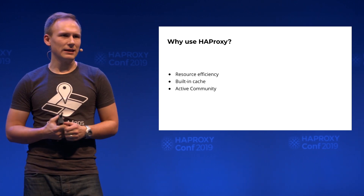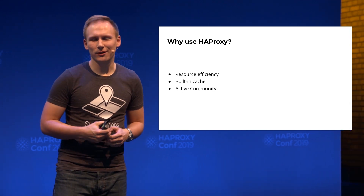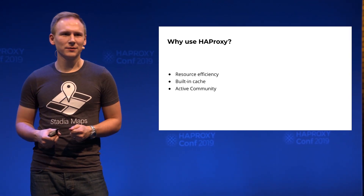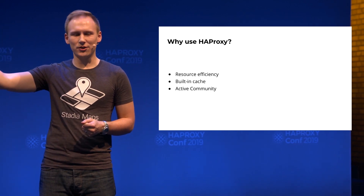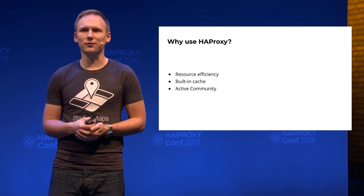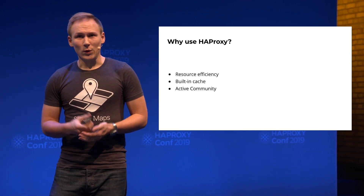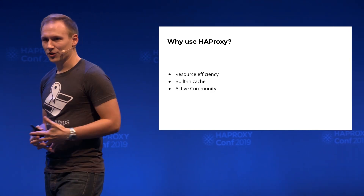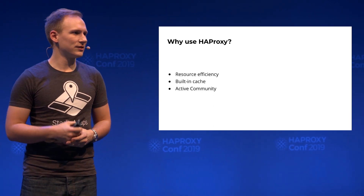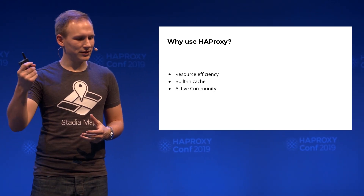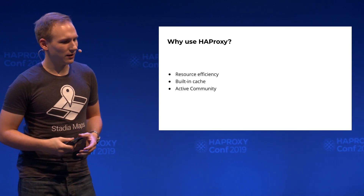Resource efficiency is key for us — we operate on a very small budget and are bootstrapped. The fact that we can put HAProxy on the edge with one core and a few gigabytes of RAM and handle all of our traffic makes a big difference. We can also use the HAProxy built-in cache, and if you're hosting a site with a lot of static assets, having an edge cache for CSS and JavaScript makes a significant difference.